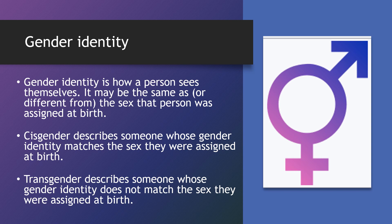Cisgender describes someone whose gender identity matches the sex they were assigned at birth. For example, a person who was assigned female at birth feels they are female. Transgender describes someone whose gender identity does not match the sex they were assigned at birth. For example, someone who was assigned female at birth does not feel that they are female. This is different from assigned gender — this is how a person feels or who they know themselves to be.